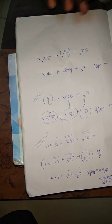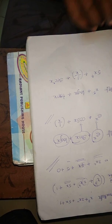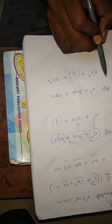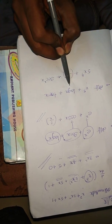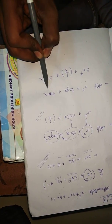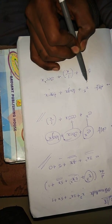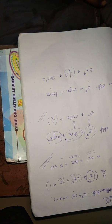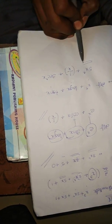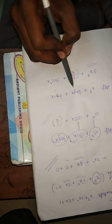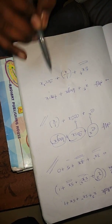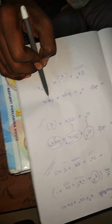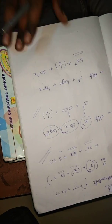This gives us a 2-mark answer. Next: differentiation of x⁵ + log x + tan x. d/dx of x⁵ gives 5x⁴. d/dx of log x gives 1/x. d/dx of tan x gives sec²x.